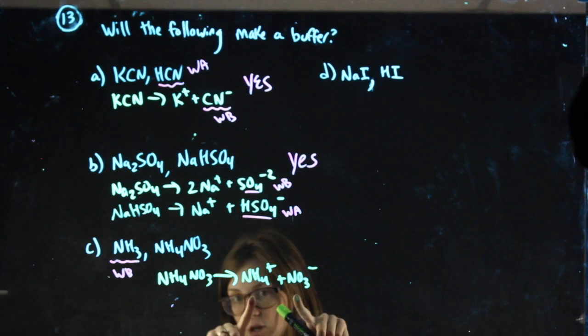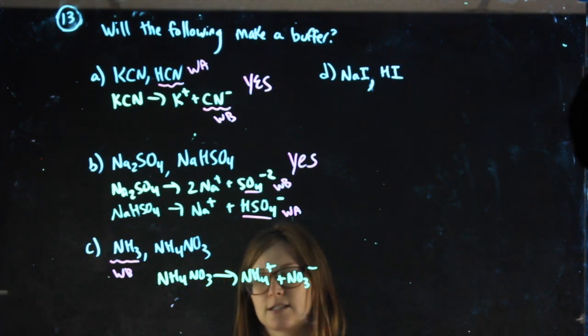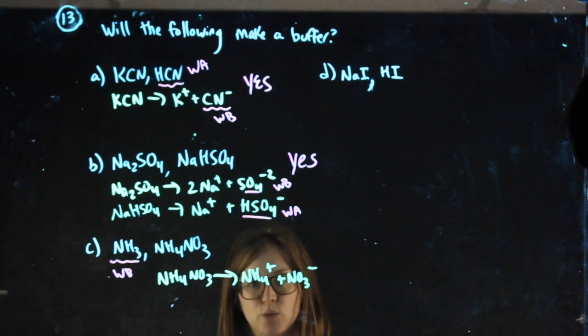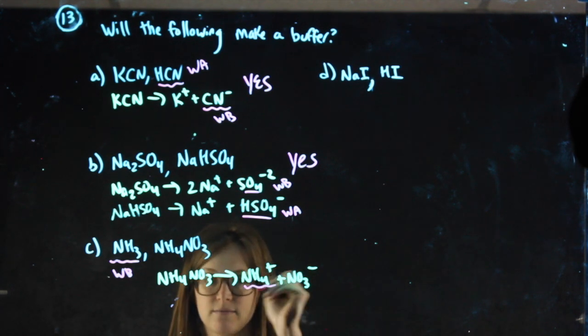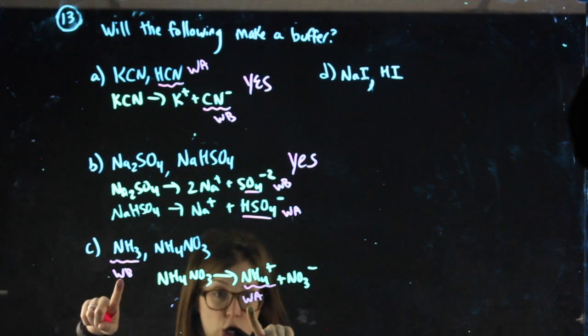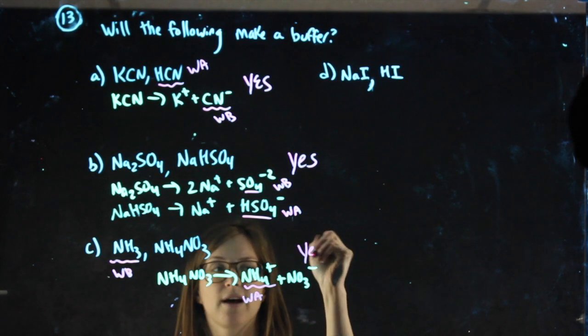NO3- is a negative ion. That is also a reasonable way to dissociate this, because those are both polyatomics we know. That then gives me my weak acid conjugate. Yes, we have a buffer.